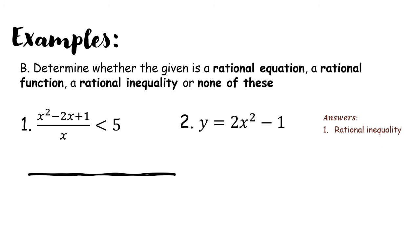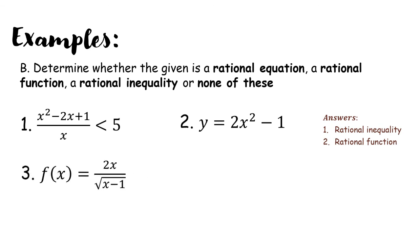Number 2: y equals 2x squared minus 1. This has an imaginary denominator over 1, making it a rational expression, and y indicates a function with an equality sign — therefore this is a rational function. Number 3: f of x equals 2x all over the square root of x minus 1. Although f of x and the equality sign are present, the denominator contains a radical expression, which is not a polynomial. Therefore, number 3 is none of these.